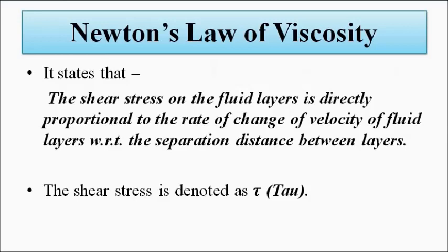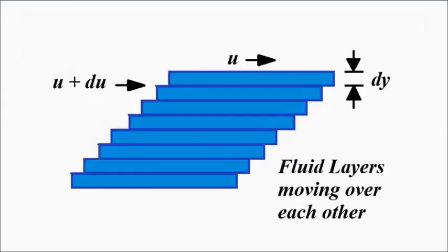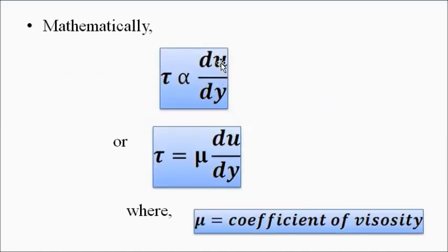Viscosity is a measure of the internal friction between the layers. Newton's law of viscosity states that the shear stress, which arises because of the relative velocity between fluid layers and the friction between them, is directly proportional to the rate of change of velocity with respect to the separation distance. If we consider two fluid layers with separation distance dy, and velocity difference du, then tau is directly proportional to du/dy.